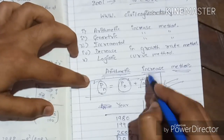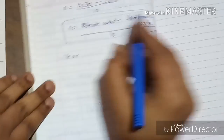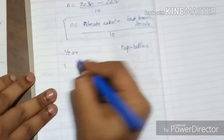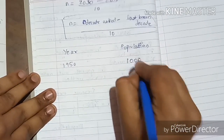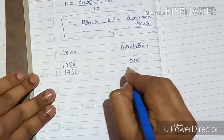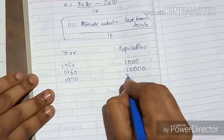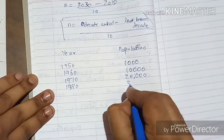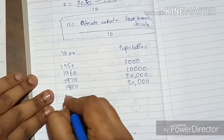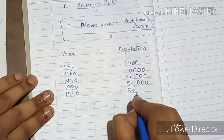Let me solve an example problem. Given the following data — year: 1950, population: 1,000; year: 1960, population: 10,000; year: 1970, population: 20,000; year: 1980, population: 30,000; year: 1990, population: 50,000.